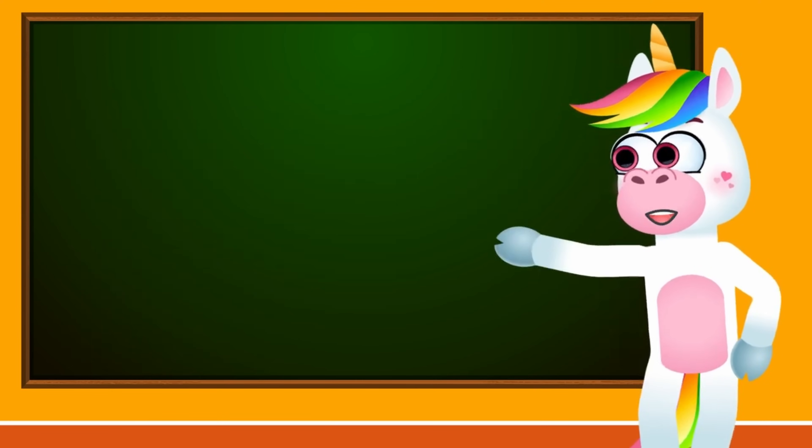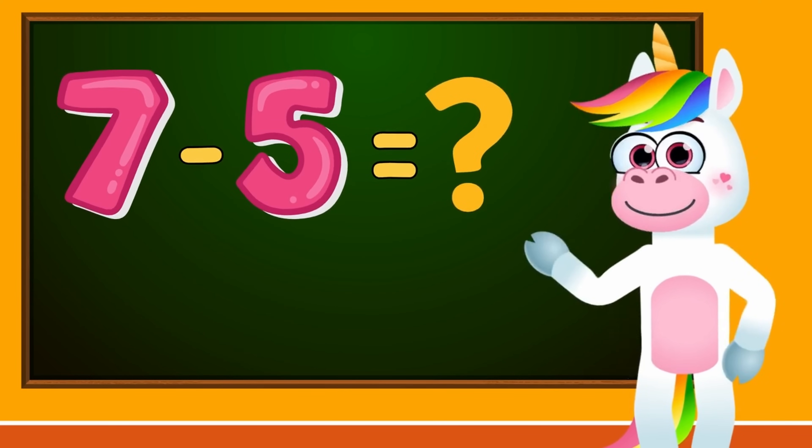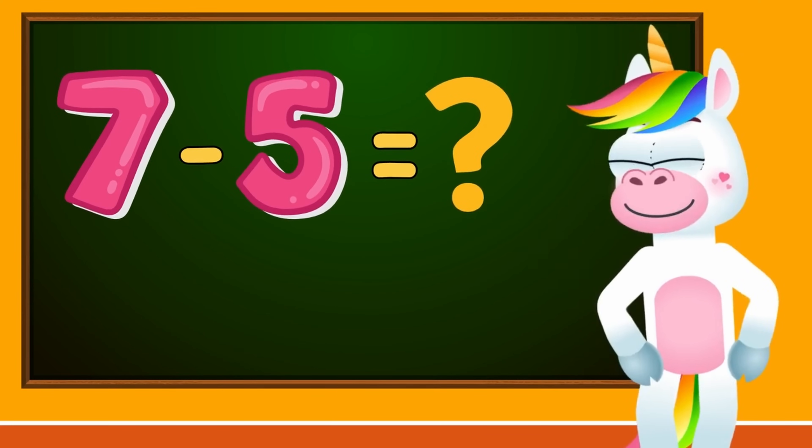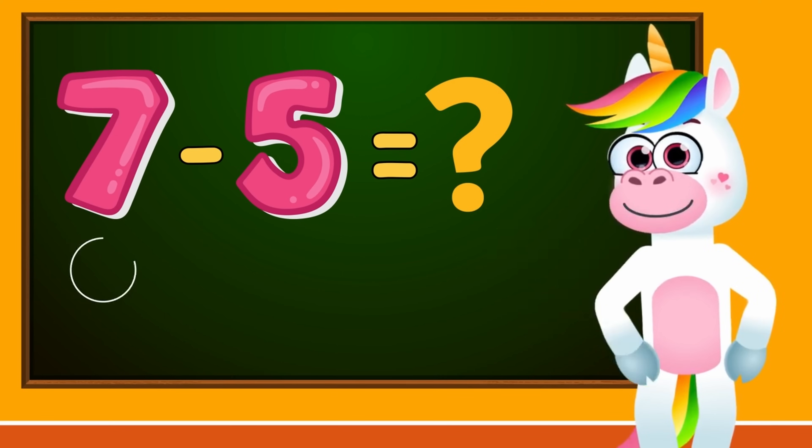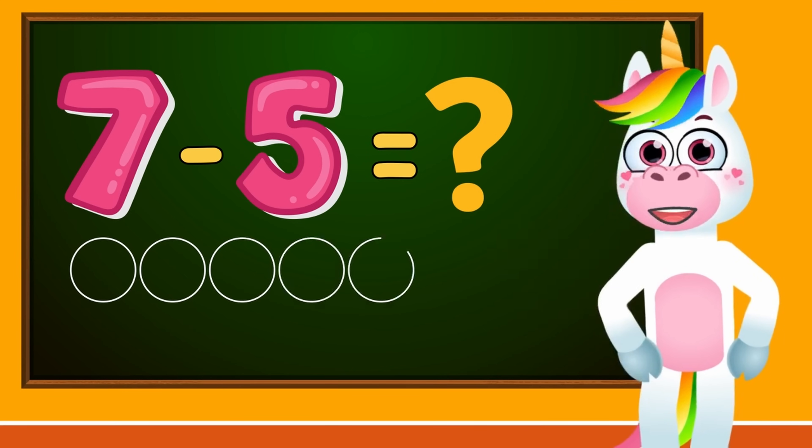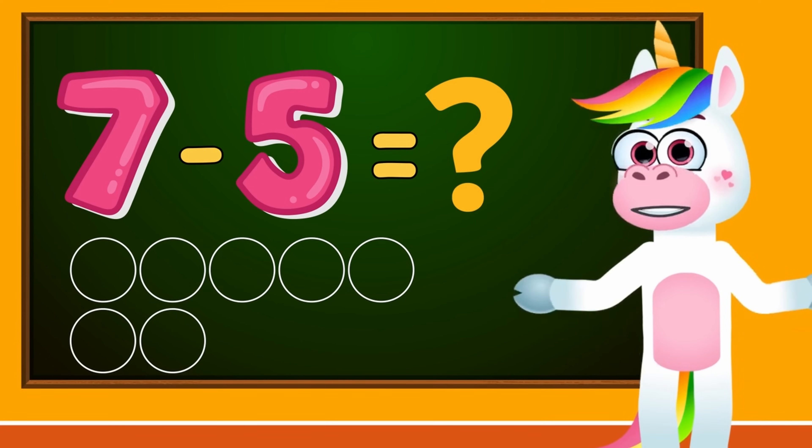Let's now find the next result together. Let's calculate what 7 minus 5 equals. How many circles do we need to draw, kids? Very correctly. 7. 1, 2, 3, 4, 5, 6, 7. So we have to subtract the number 5. We'll cross out 5 circles.